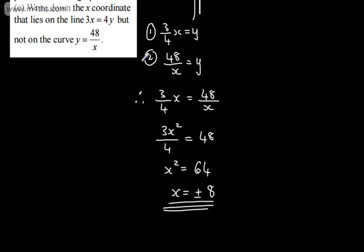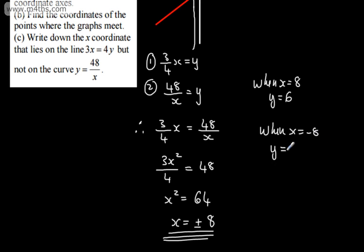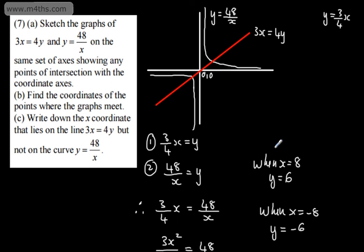So at this stage, we need to find the y-coordinates. When x is equal to 8, y is going to be equal to 48 over 8, so y is going to be 6. We can say when x is equal to negative 8, y is going to be equal to 48 over negative 8, which is going to be negative 6. So this point here has coordinates (8, 6), and this point here has coordinates (negative 8, negative 6). So those are our points of intersection, or the coordinates of the points where the graphs meet.